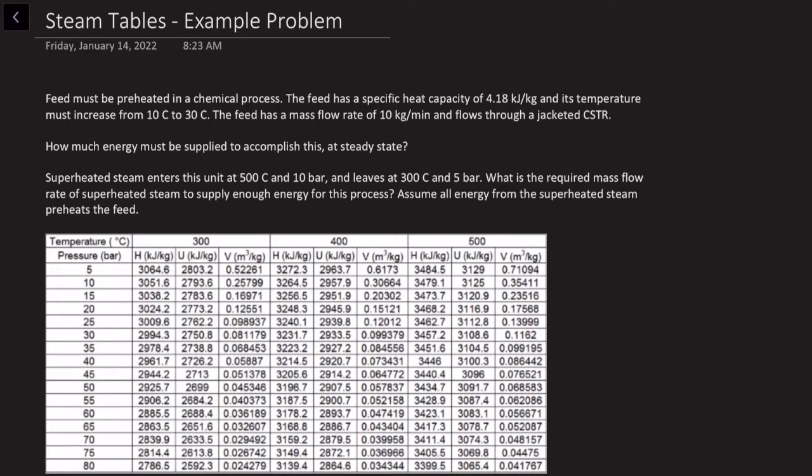We've got some feed going into a chemical process that we need to preheat. We know the specific heat capacity of this particular feed, we know the temperature that we need to increase it to, and we know its mass flow rate. The question is how much energy do I have to supply to this thing at a steady state? And then the follow-up is if we're using superheated steam to supply this energy, and we know the temperature and pressure of our inlet and outlet of that superheated steam, we have to figure out what mass flow rate of superheated steam is going to be needed.